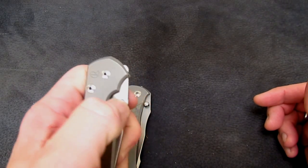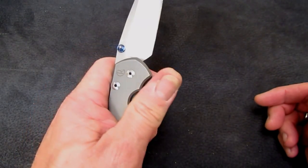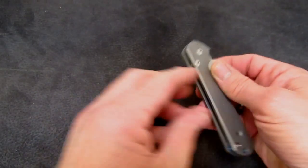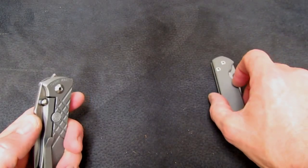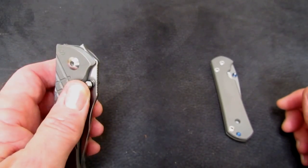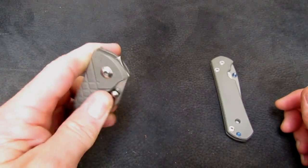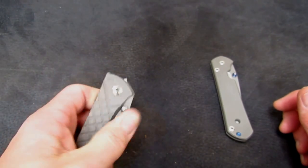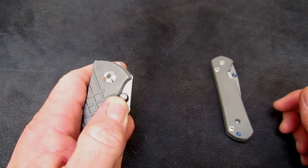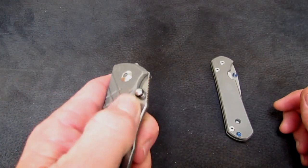Now let's look at the Umnumzaan. How is it different? Well, if you notice, you can't even hardly get on that thumb stud the same way to make that outward move. What the Umnumzaan wants you to do is lay your thumb right on this big chamfer.